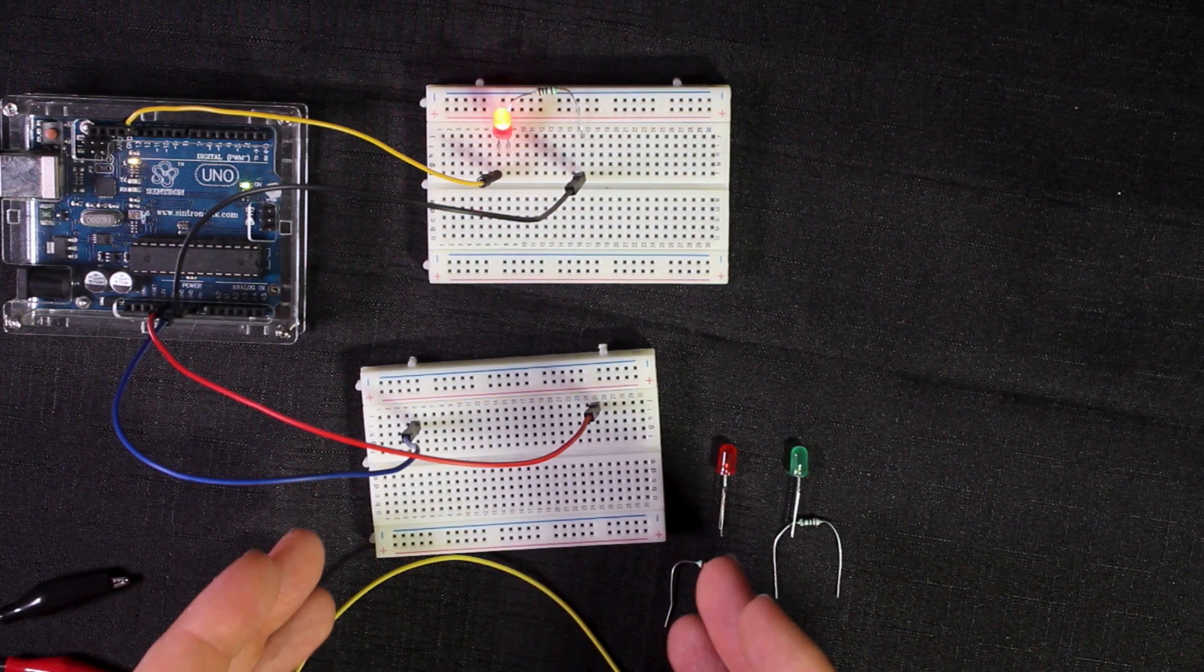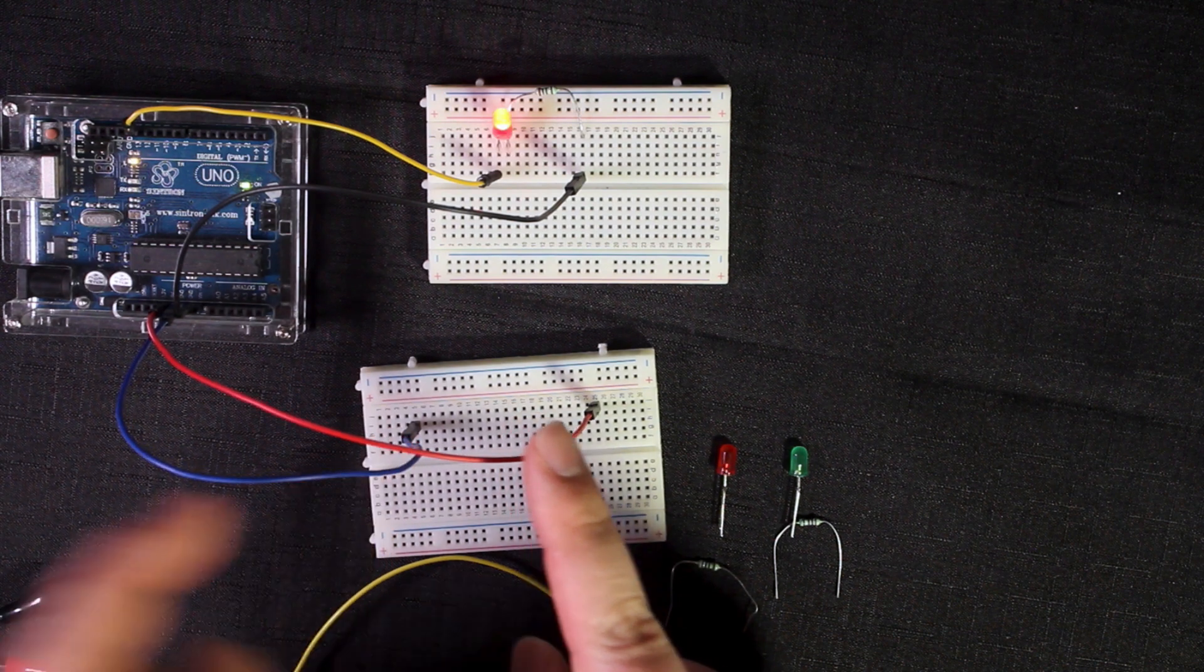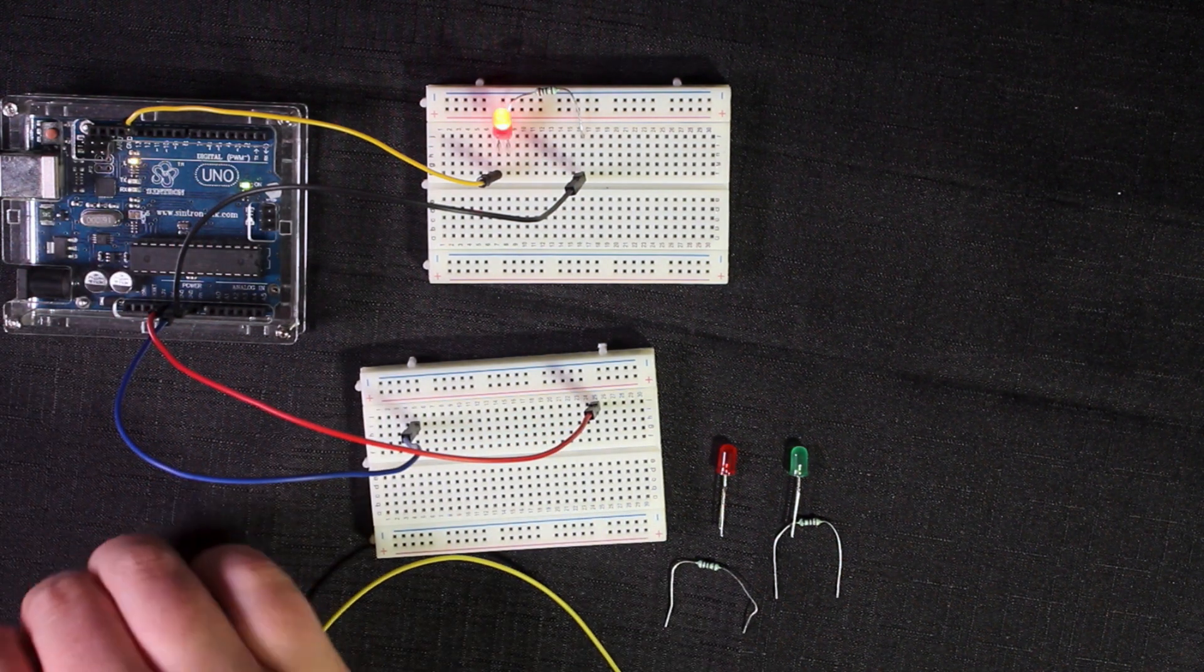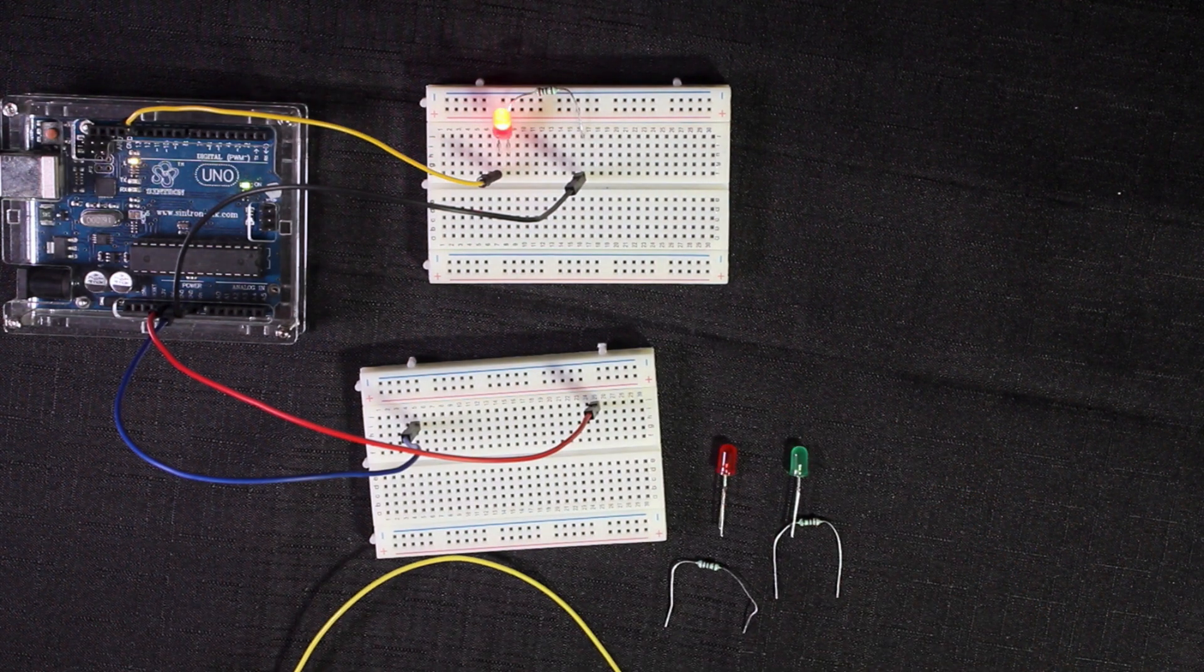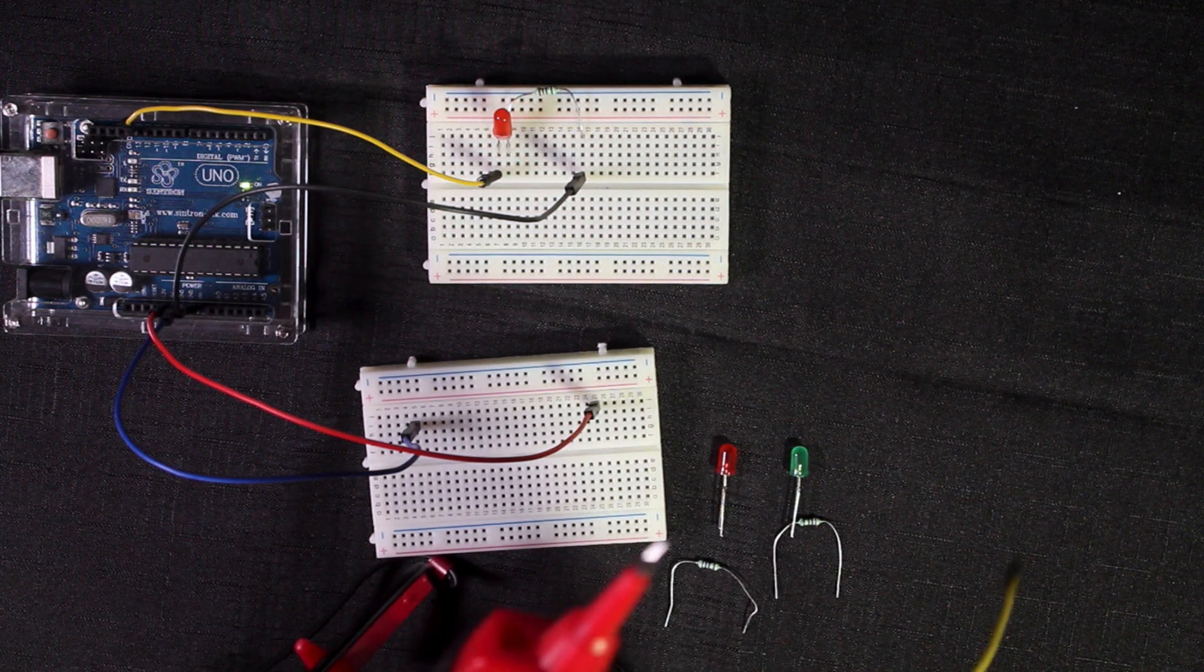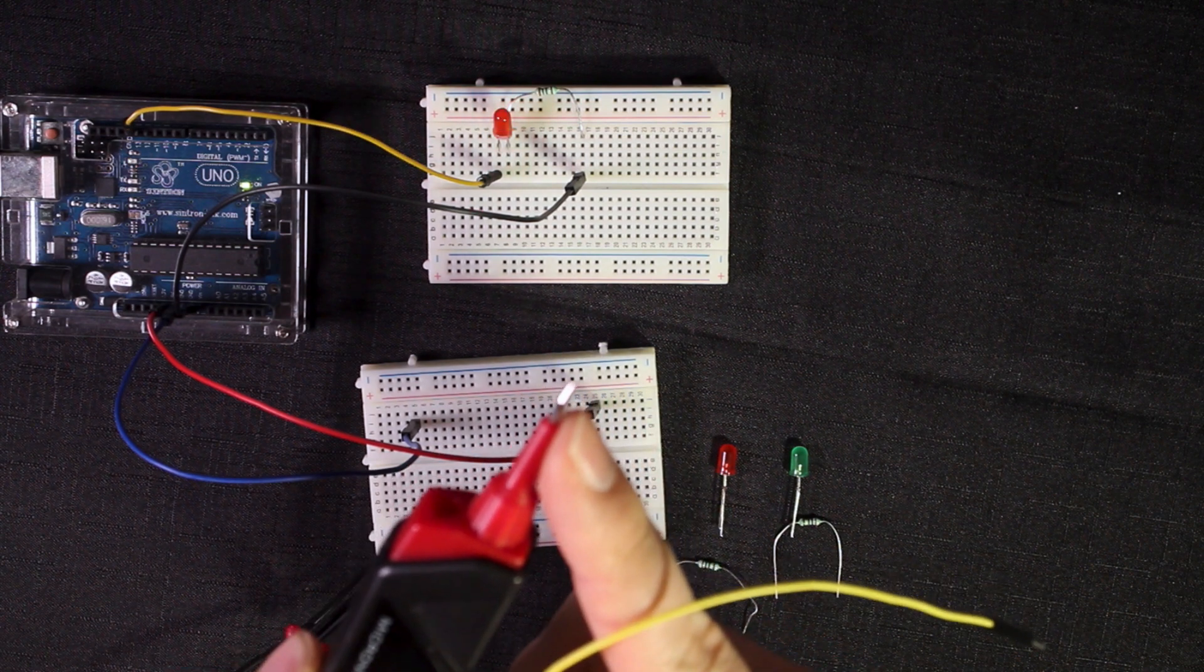What we're doing here is these two going straight into the Arduino act like the crocodile clips on logic probes supplying power, and then what this lead will do is act as our probe tip.